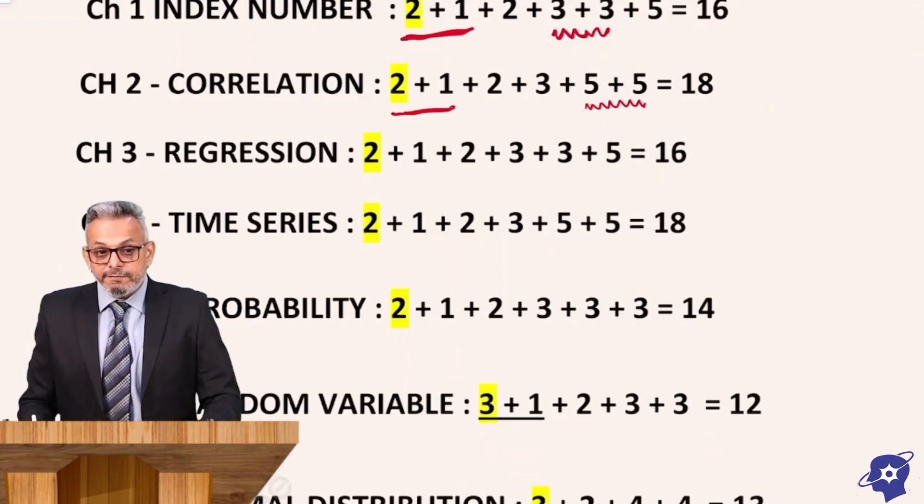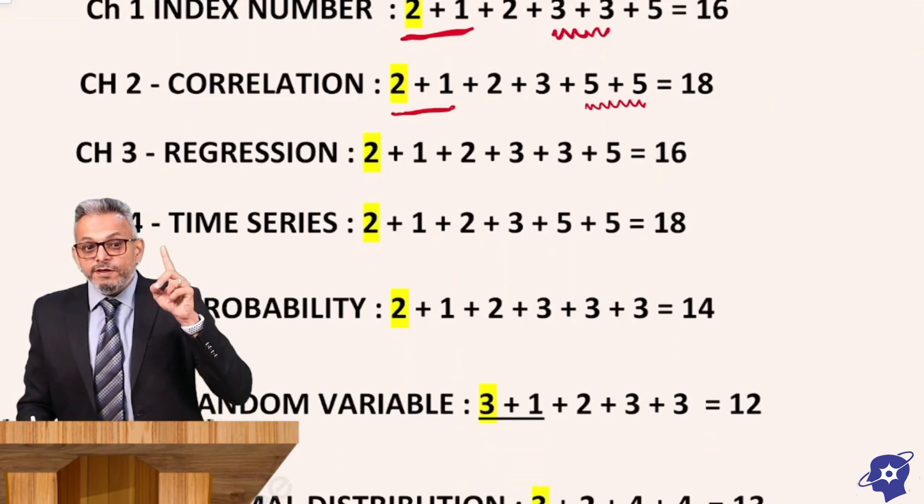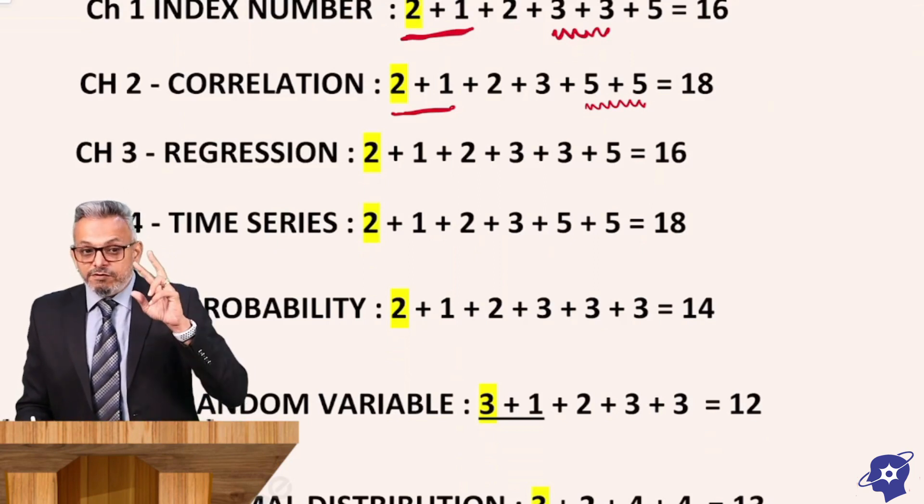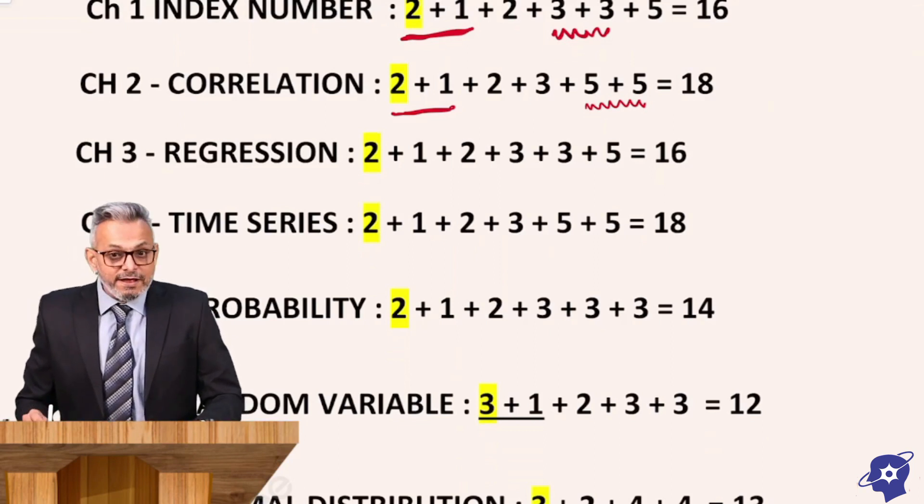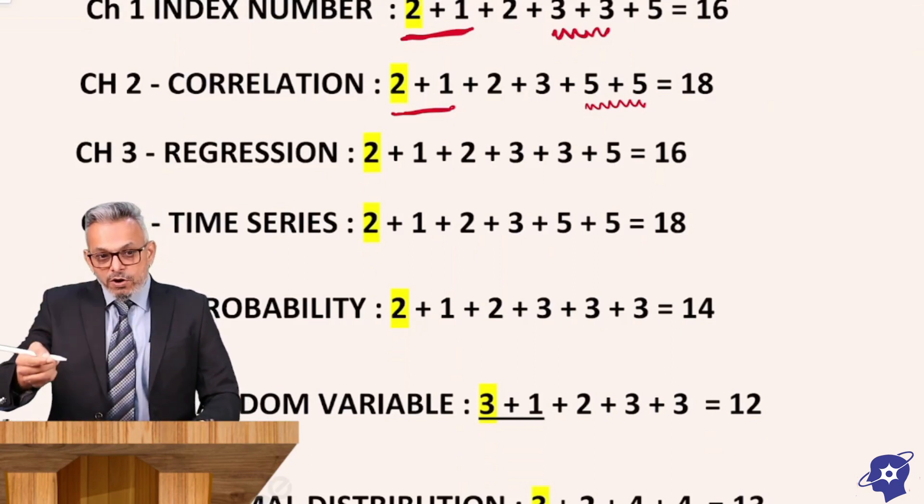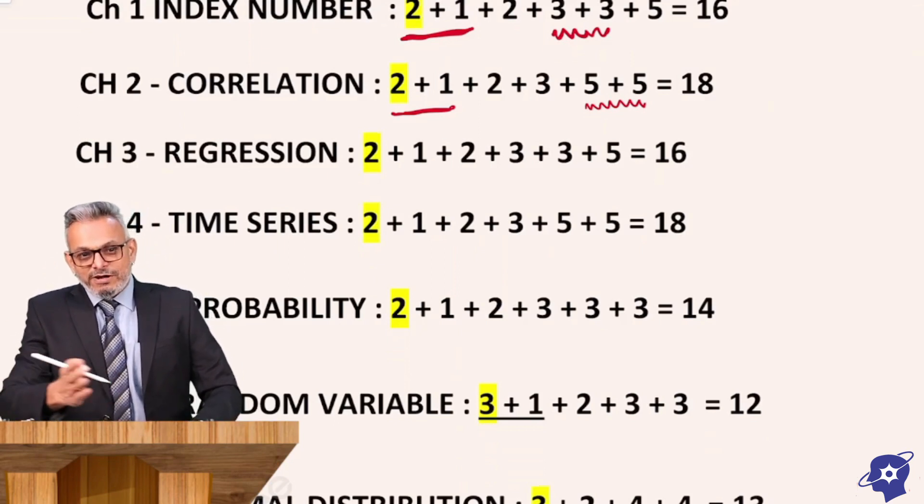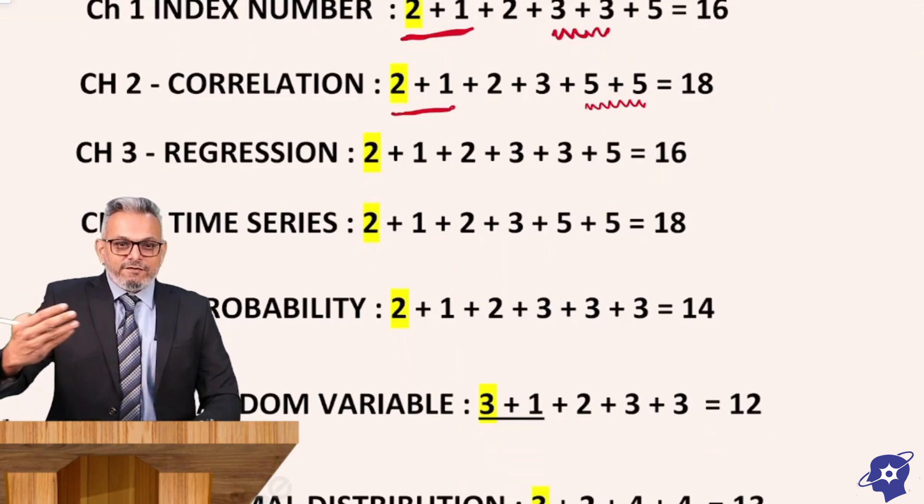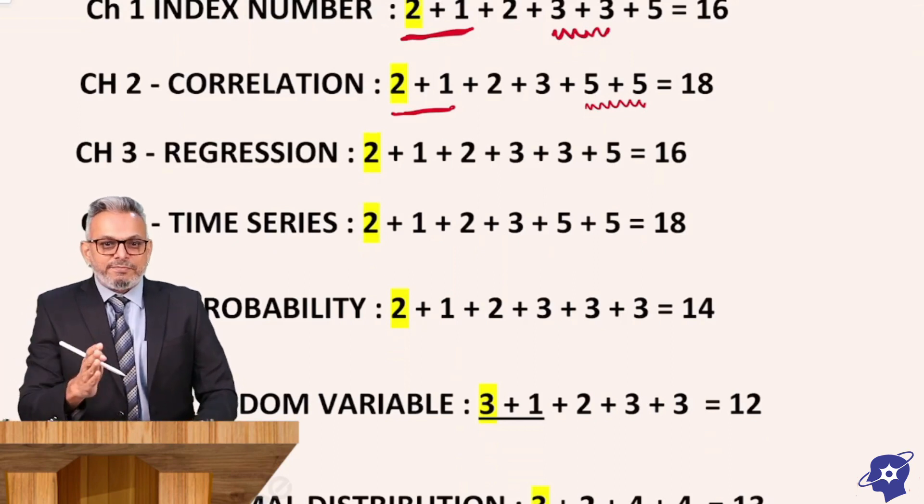Then 2 marks ka a question, plus 3 marks ka a question, plus 5 + 5. It means there will be 2 questions from this chapter correlation which will be 5 marks each. There will be 2 long questions. So 2 + 1 + 2 + 3 + 5 + 5 which is equal to 18 marks.